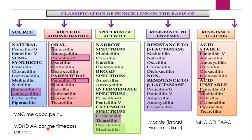For the extended spectrum: 'car mein time pass' — leaving intermediate for now since it is in between. Intermediate includes Penicillin G and Penicillin V — both antibiotics which are in between narrow and broad. For extended spectrum, 'car mein time pass': Car is for Carbenicillin, Mei is for Mezlocillin, Ti (time) is for Ticarcillin, P (pass) is for Piperacillin. So extended spectrum includes Carbenicillin, Mezlocillin, Ticarcillin, and Piperacillin.